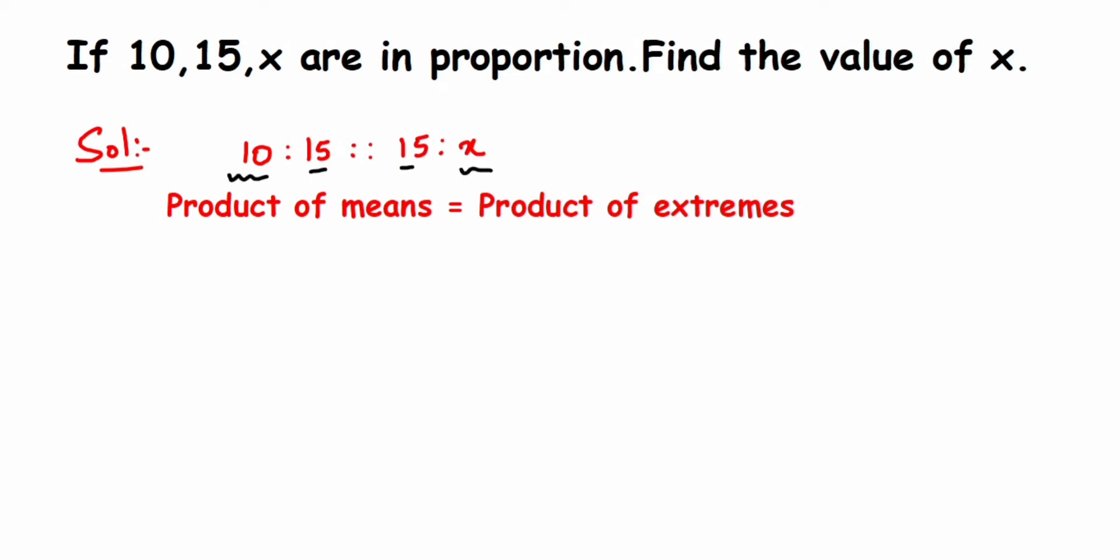Product means multiplication. Product of means: we multiply 15 and 15. So 15 multiplied by 15 equals product of extremes, which is 10 multiplied by x. 15 times 15 is 225 equals 10 times x.